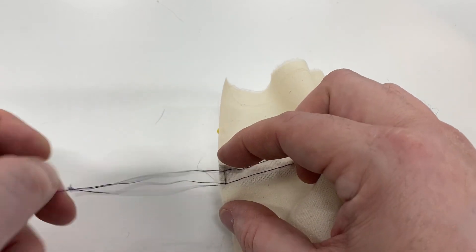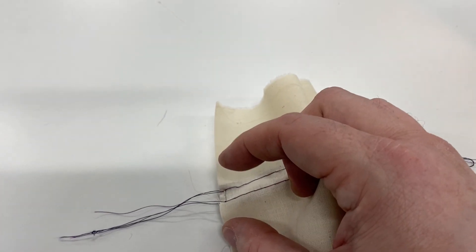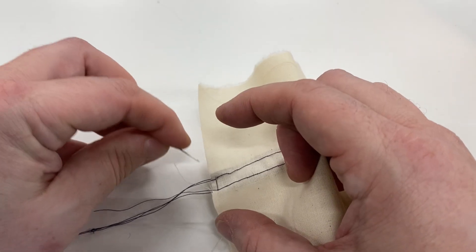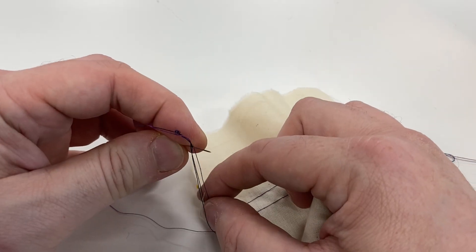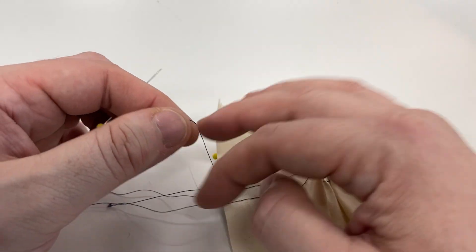My threads have gotten a little twisted on this side, so I'm going to take a straight pin to separate them so I can make sure I'm getting the right one.